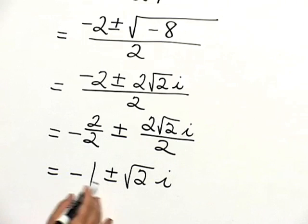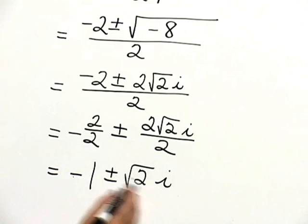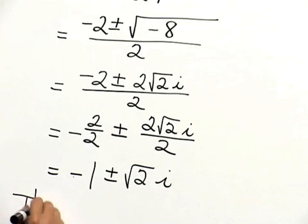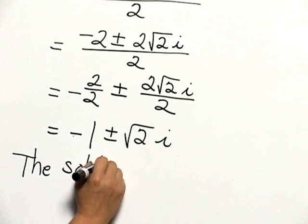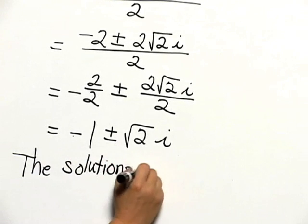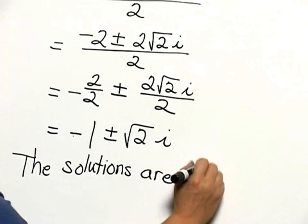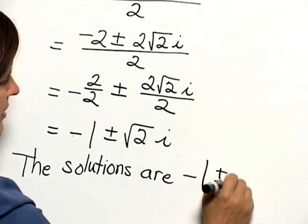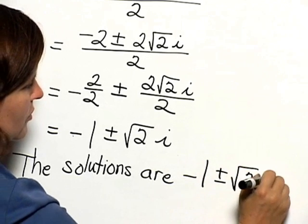So this is really two numbers, negative 1 plus the square root of 2i, and negative 1 minus the square root of 2i. So we can state that the solutions are negative 1 plus or minus the square root of 2i.